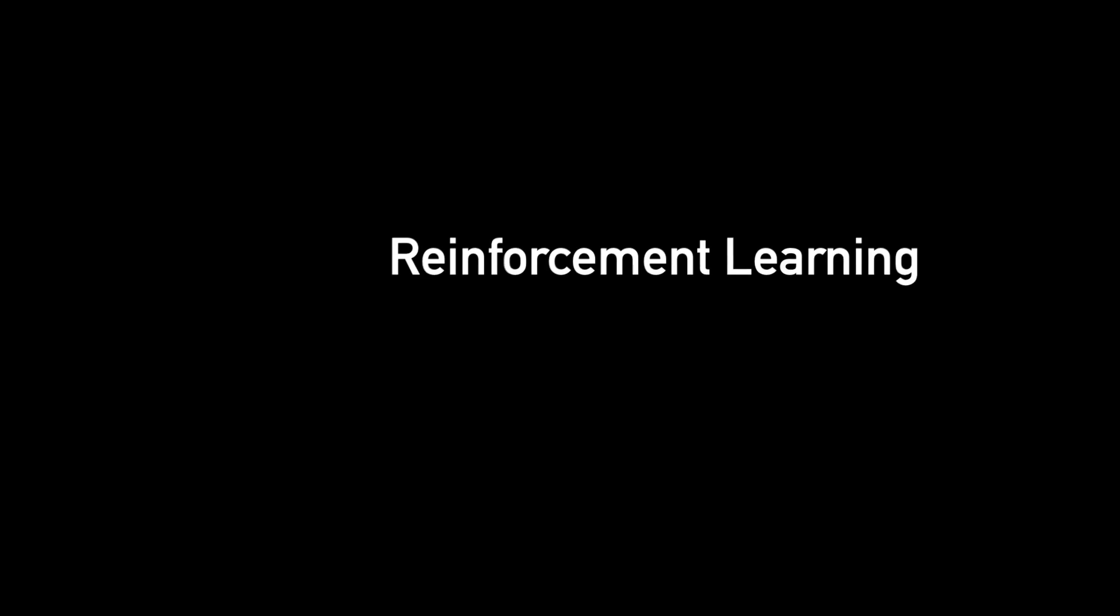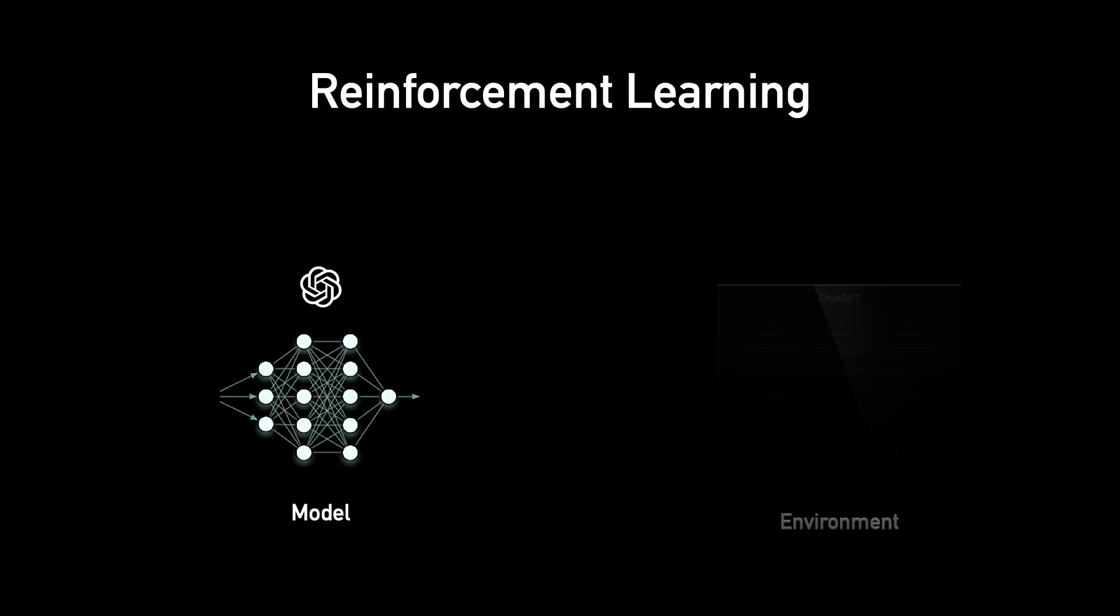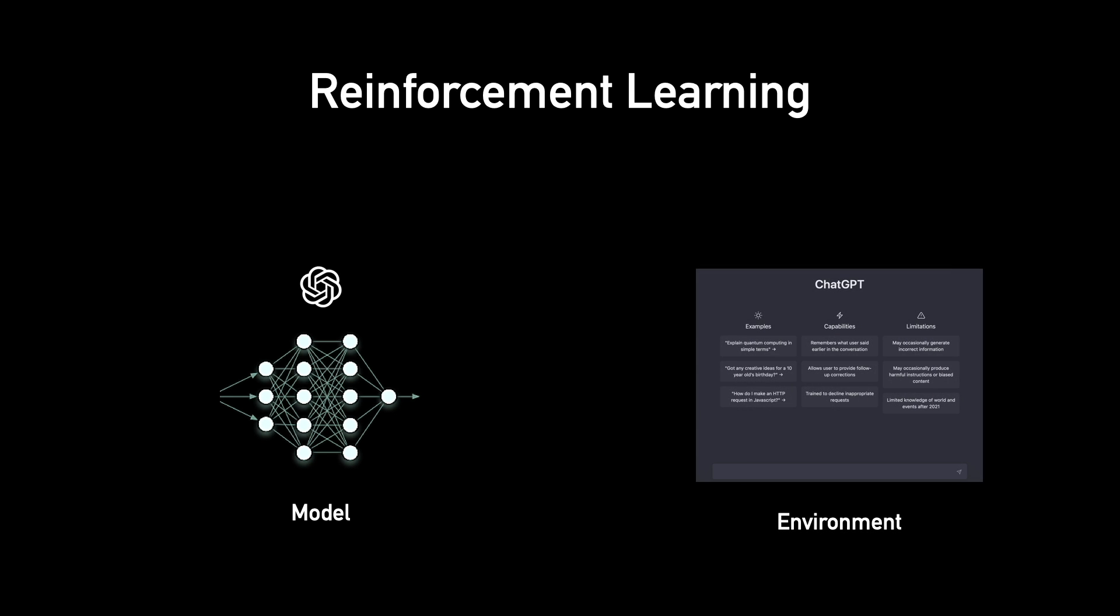The premise of reinforcement learning is very simple. We have a model, also known as an agent sometimes, and an environment. The model performs an action in the environment and gets a reward based on how good or bad the action was.